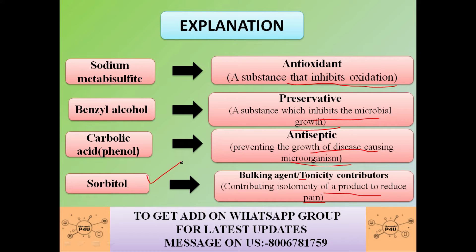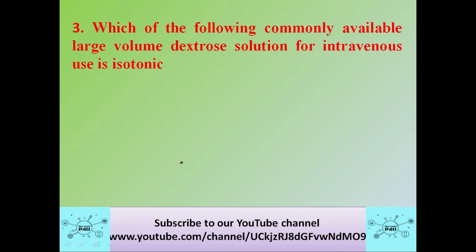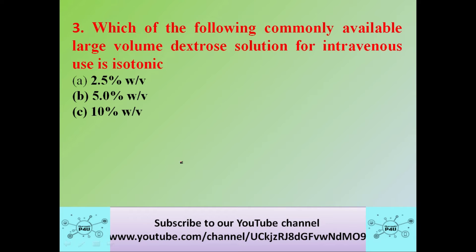Next question: which of the following commonly available large-volume dextrose solutions for intravenous use is isotonic? Options: A: 2.5% w/v, B: 5.0% w/v, C: 10% w/v, D: 20% w/v.